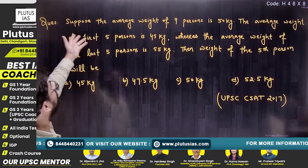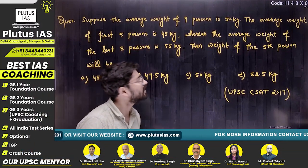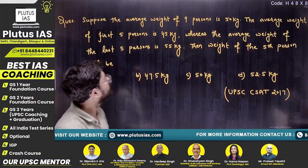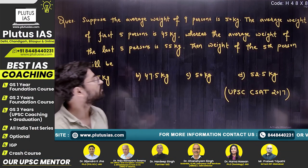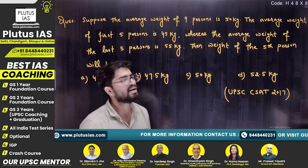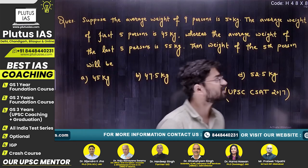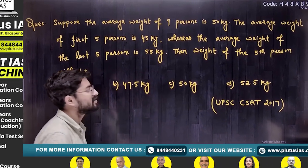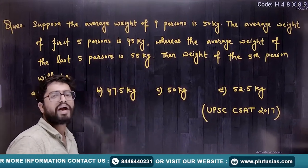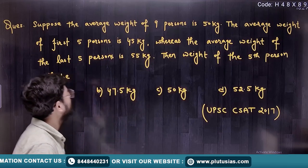The question says: suppose the average weight of 9 persons is 50 kg, the average weight of the first 5 persons is 45 kg, whereas the average weight of the last 5 persons is 55 kg. You have to find the weight of the 5th person.